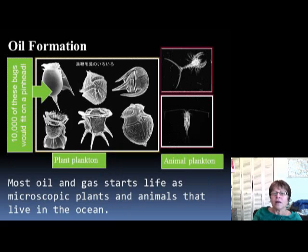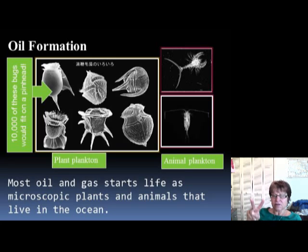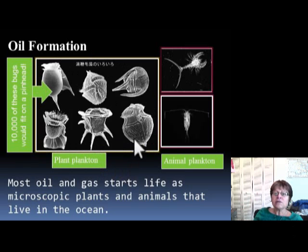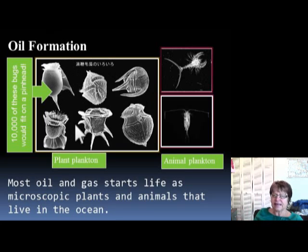Oil actually forms from living things, most of them in the open ocean near the surface — the plankton. We learned about two kinds: phytoplanktons, shown on the left, and zooplanktons, shown on the right. Zooplanktons feed on phytoplanktons, and phytoplanktons photosynthesize. All oil and gas starts life like that.